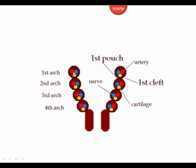If we cut the arches in a coronal section, this is what we would see. There's an arch on either side, and there are four of them. Each arch is separated from the other by a cleft on the outside. On the inside, the arches are separated from one another by a pouch. Within each arch, there is an artery, there is a nerve, and there is cartilage, along with connective tissue.